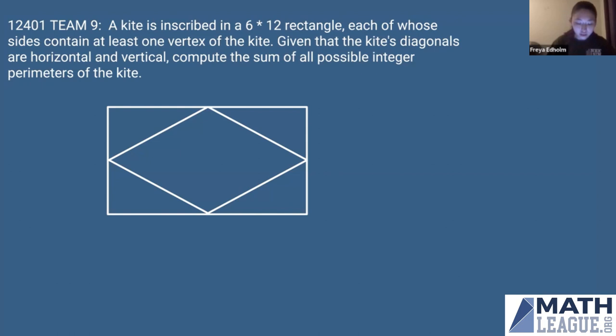Okay, so the kite's diagonals being horizontal and vertical just means that our lines of symmetry are going to be here. So there are two cases to consider.